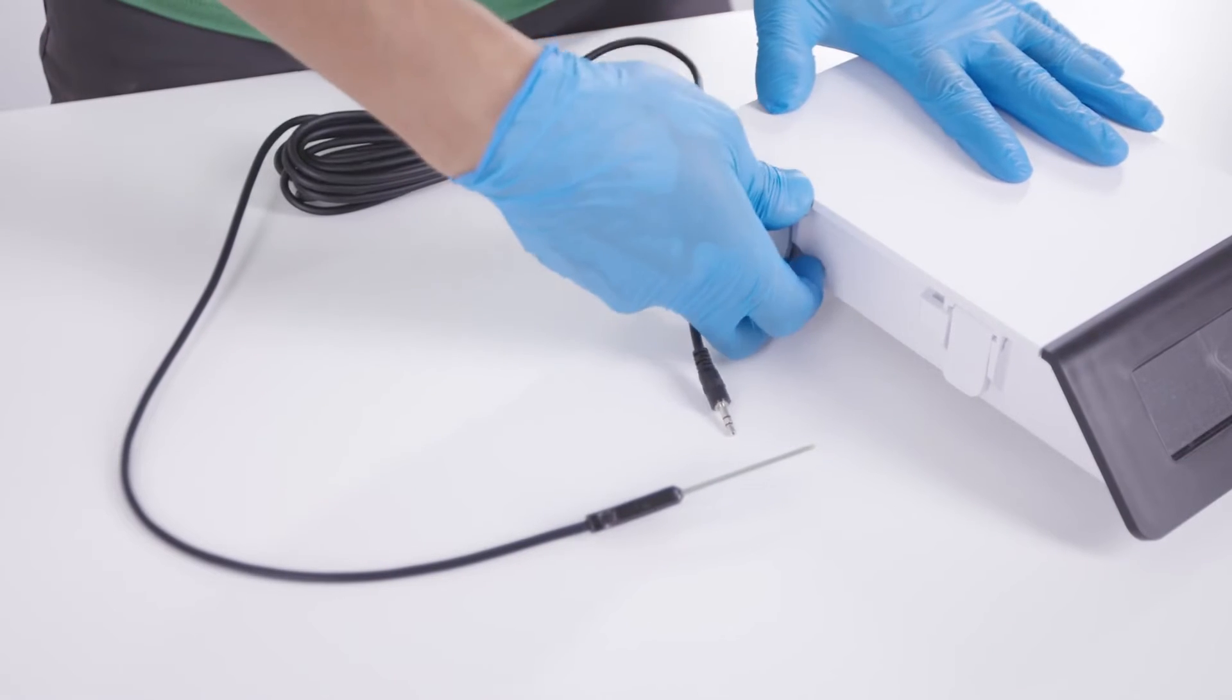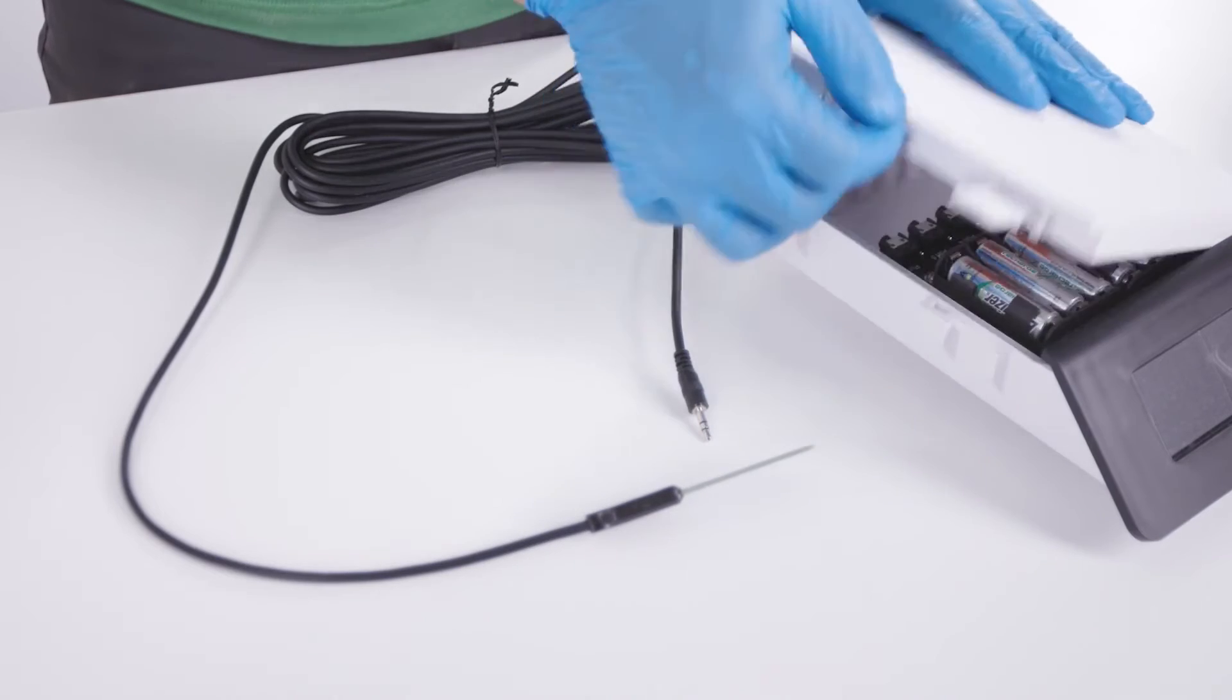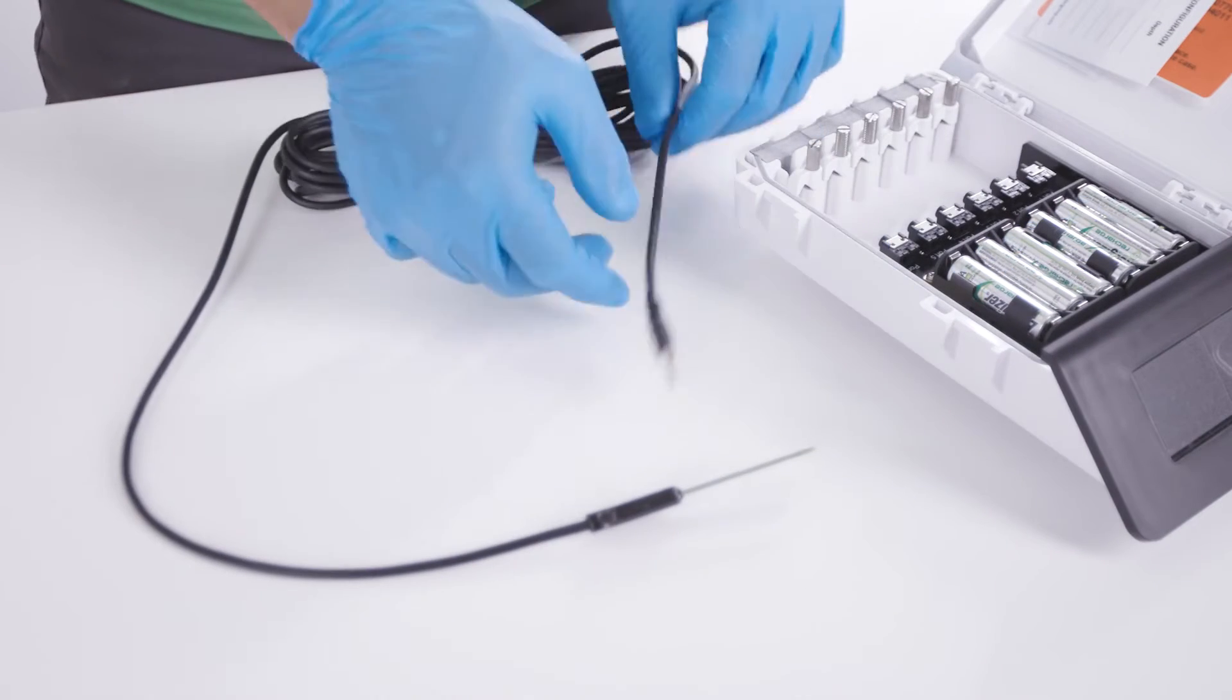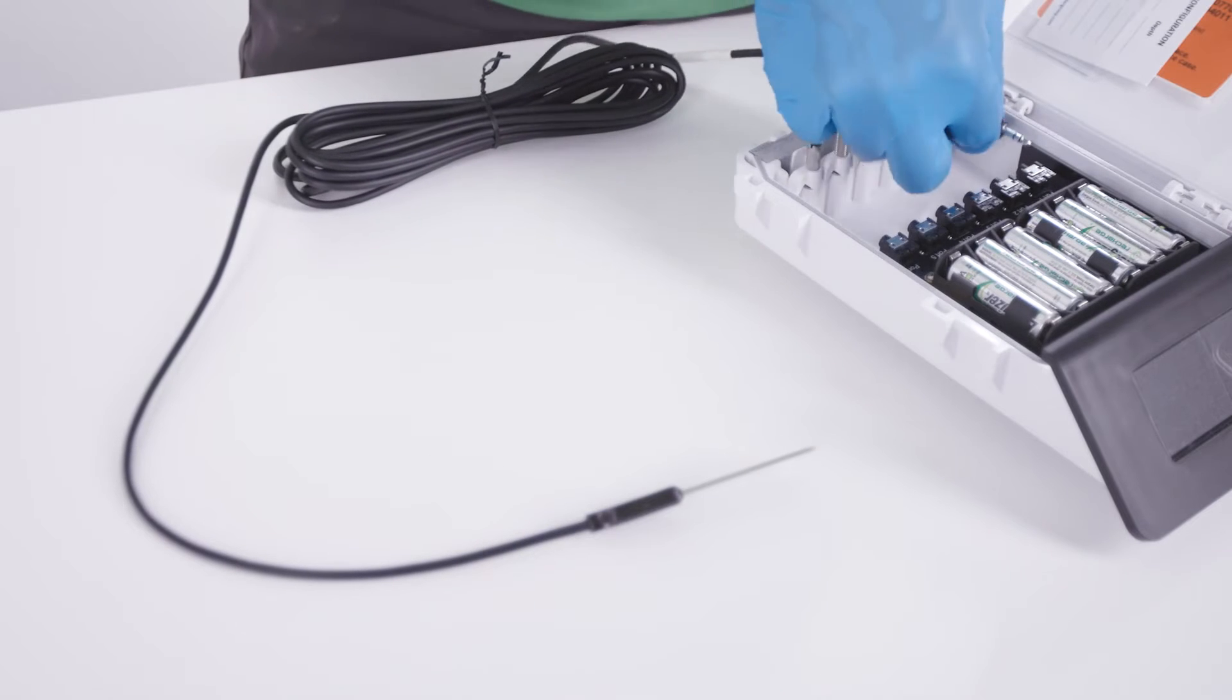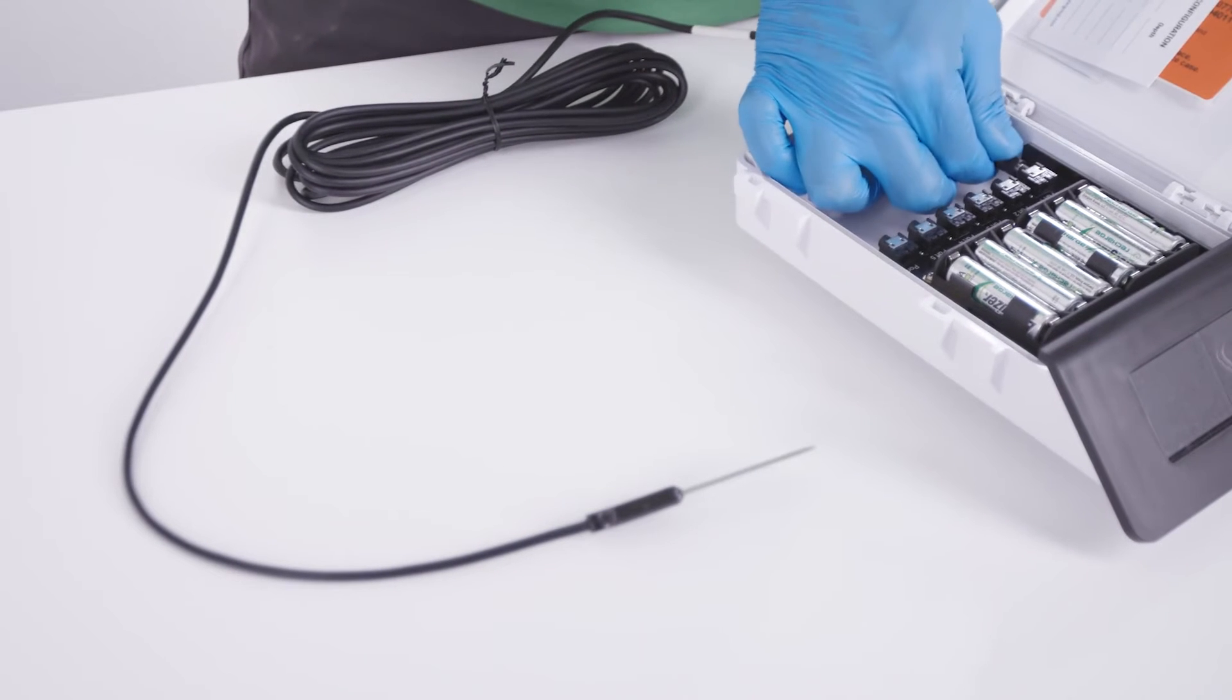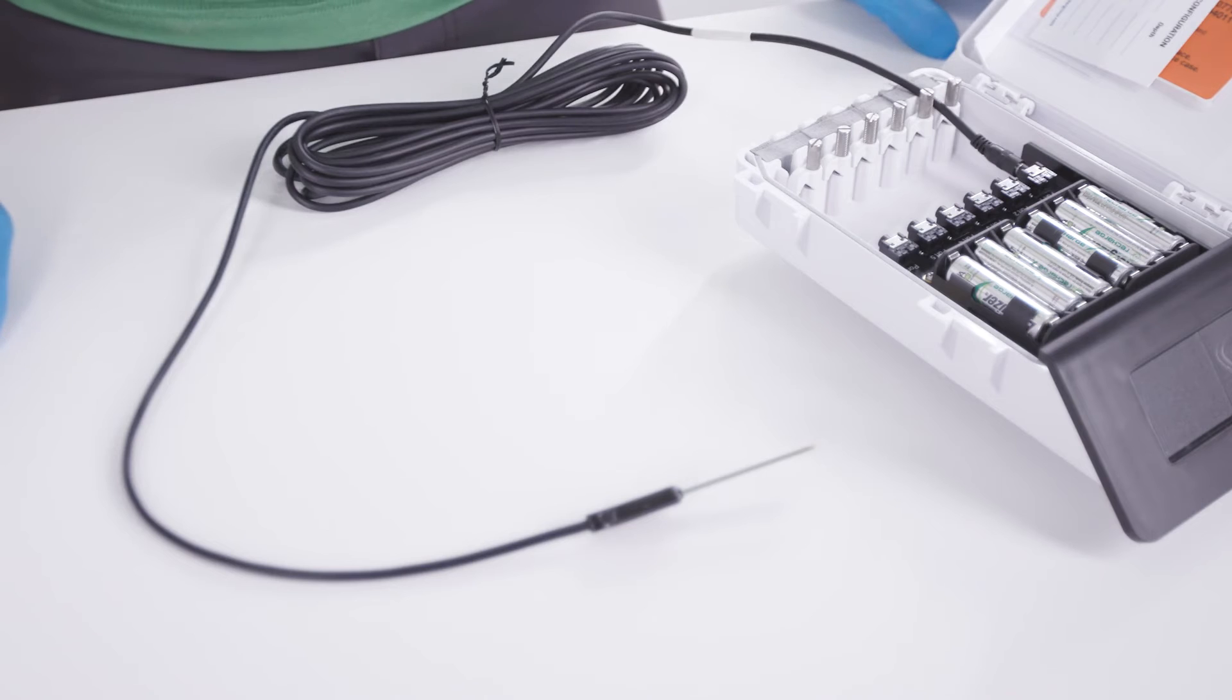Next, plug the sensor into the same data logger or ZSC handheld you'll use in the field. The output of analog sensors is often dependent on the input voltage from the logging source. Because of this, it's best to use the same device for calibration.